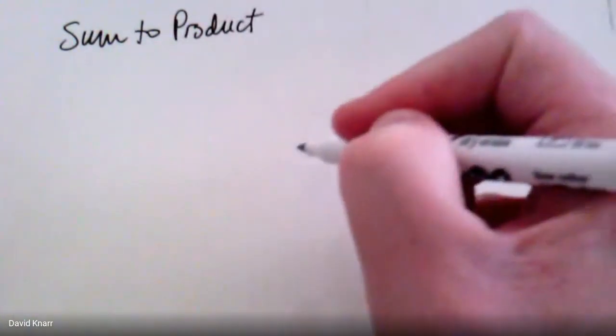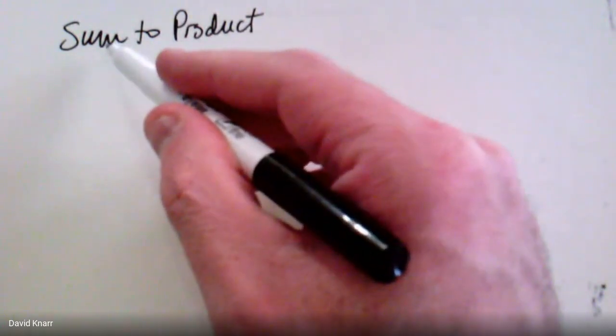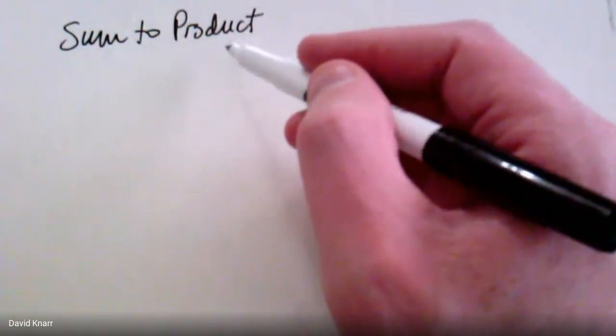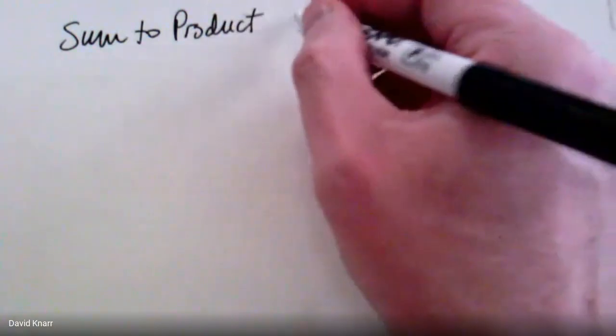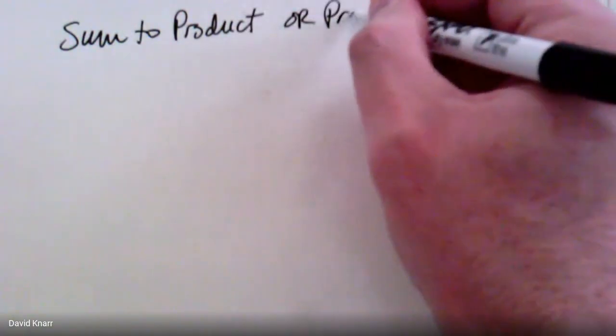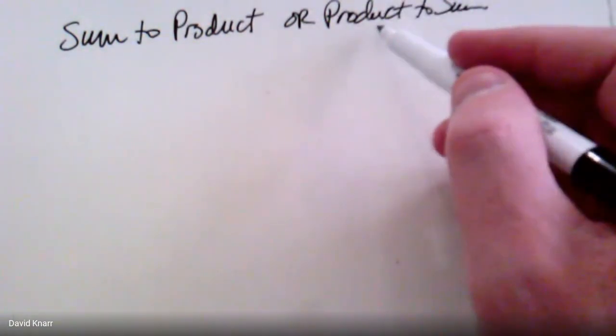The idea behind these formulas is pretty simple. A sum-to-product formula takes two trig functions that are being added together and converts them to the product of two trig functions — maybe the same trig functions, maybe slightly different. Or you can go the other way: go from product to sum, where two trig functions that are multiplied get turned into a sum. There are uses for both, and we're going to see some of them right now.